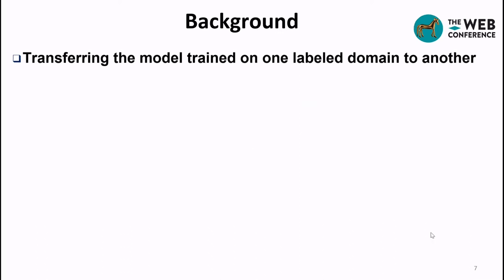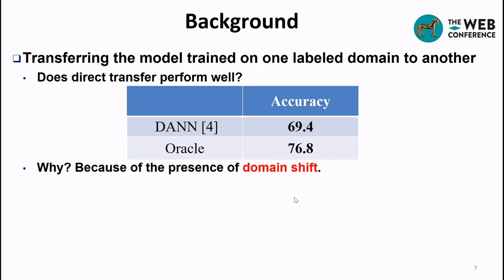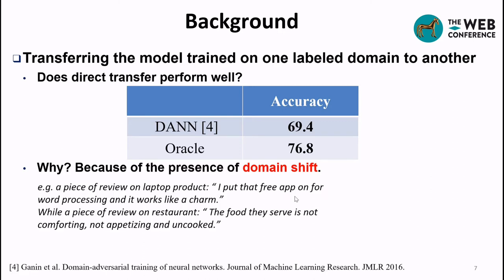One alternate solution is to train a deep neural network on a labeled source domain and transfer it to the target domain. However, due to the presence of domain shift, direct transfer may result in significant performance degradation. For example, a review on a laptop: 'I put the free app on for word processing and it works like a charm,' versus a restaurant review: 'the food they serve is not comforting, not appetizing, and uncooked.'